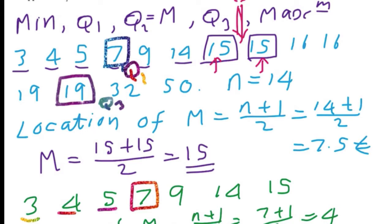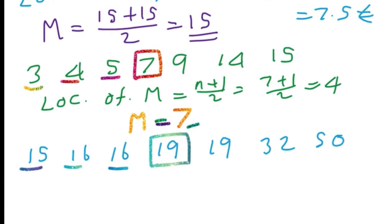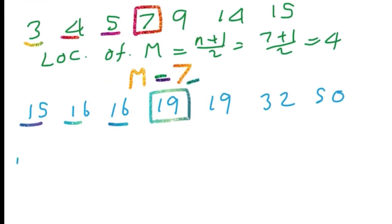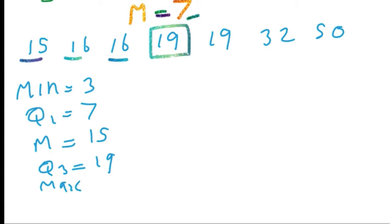Therefore, now we know Q1, Q2, Q3. And also we can find the minimum - this is the minimum - and maximum is this. We can write down the 5-number summary: minimum equals 3, Q1 equals 7, Q2 or M equals 15, Q3 equals 19, and maximum equals 50.